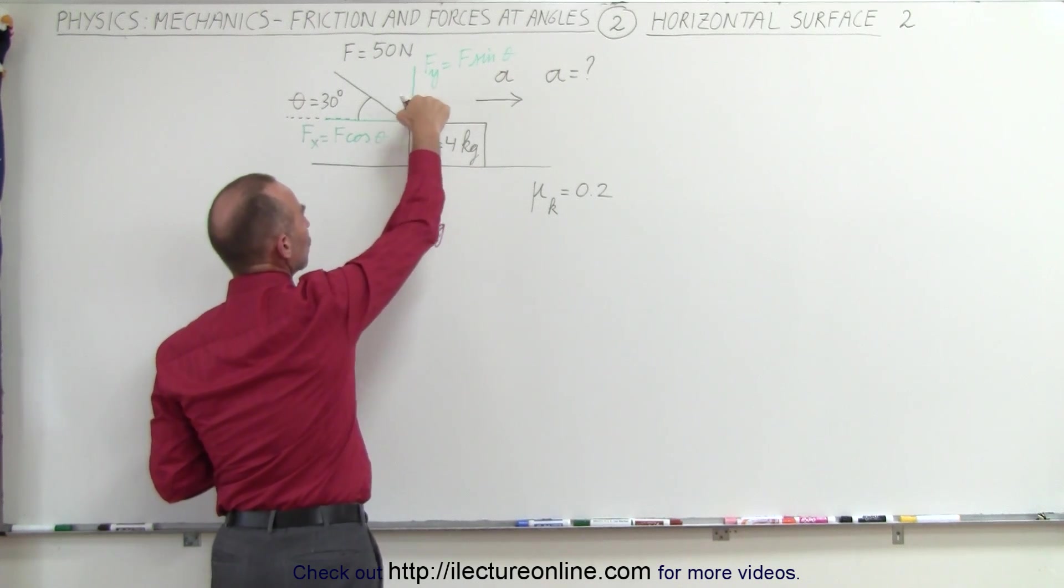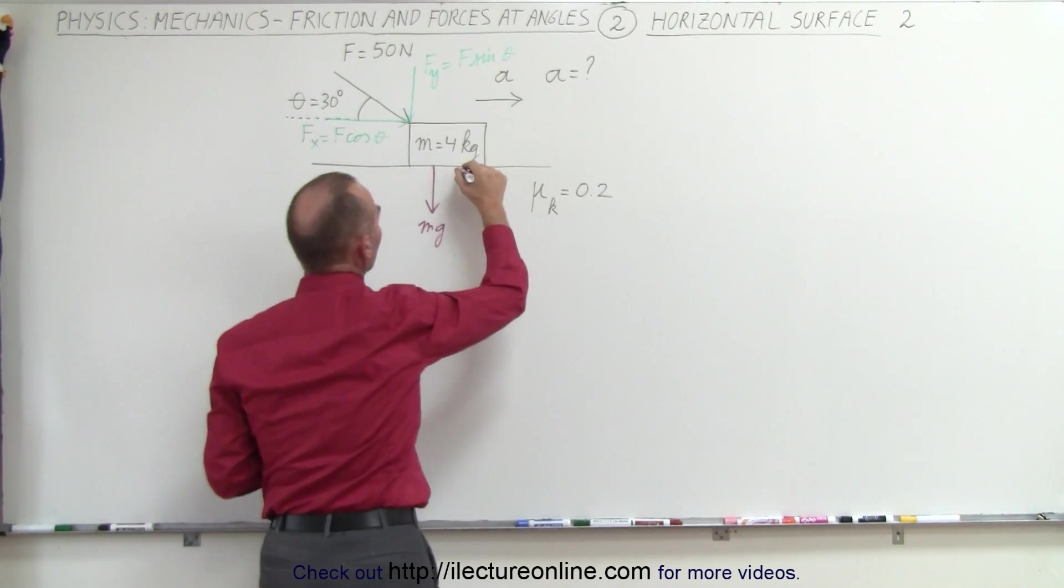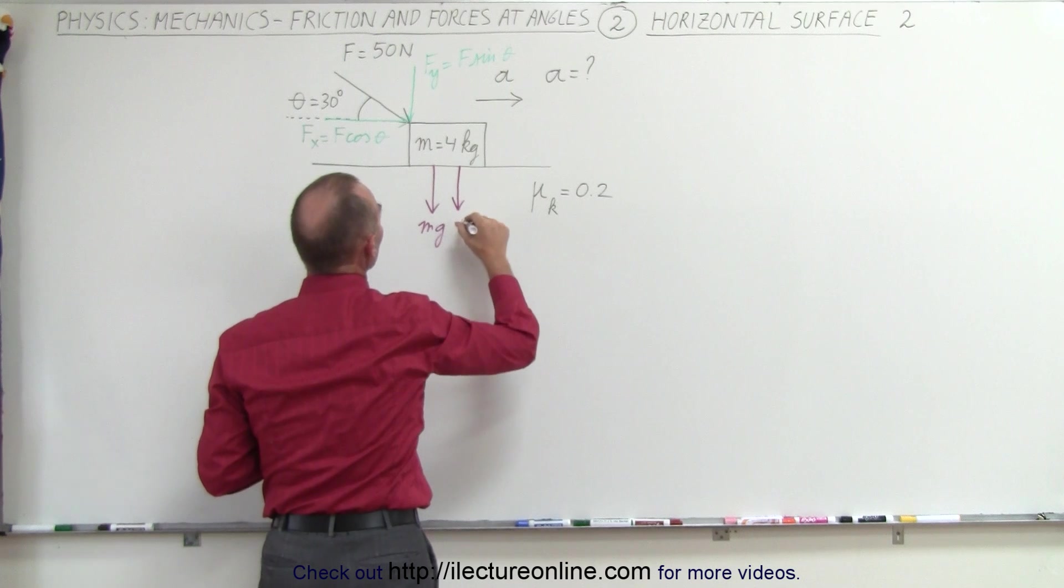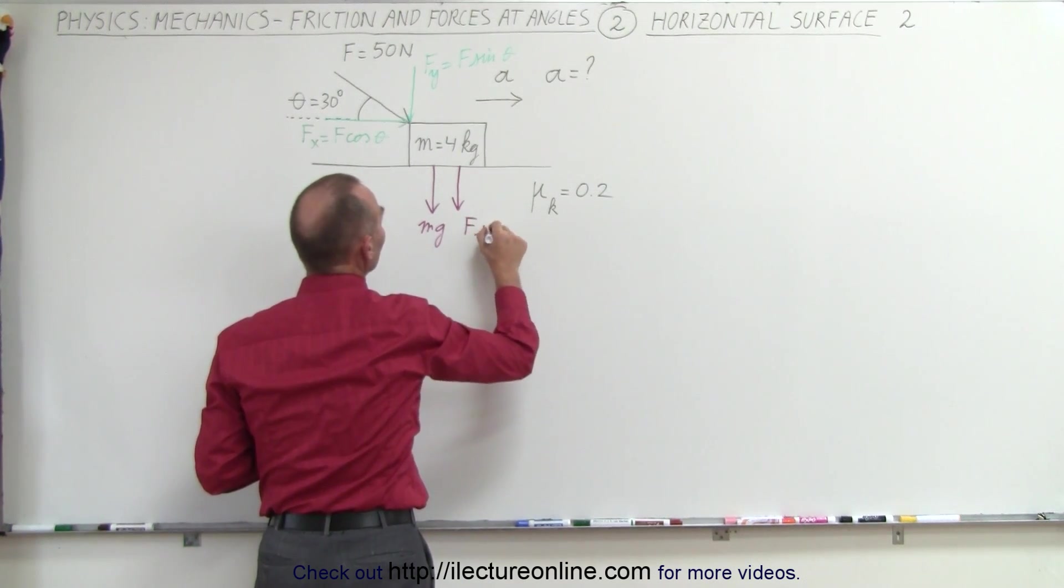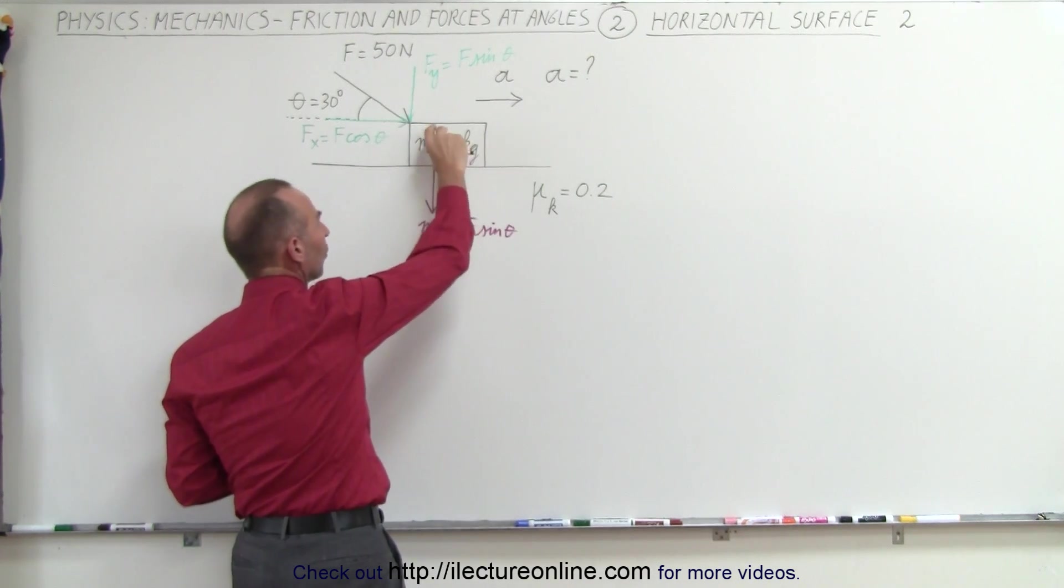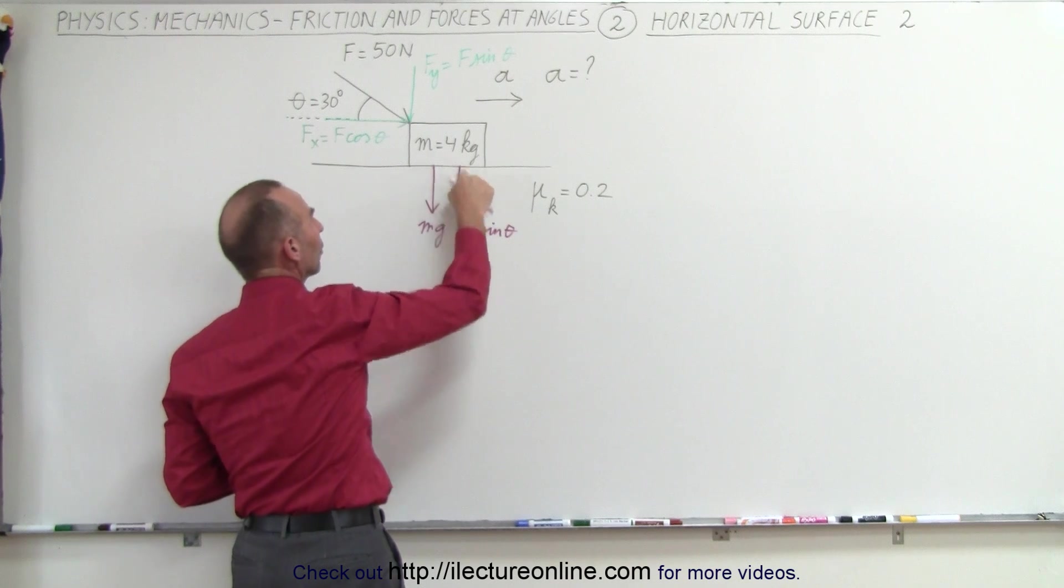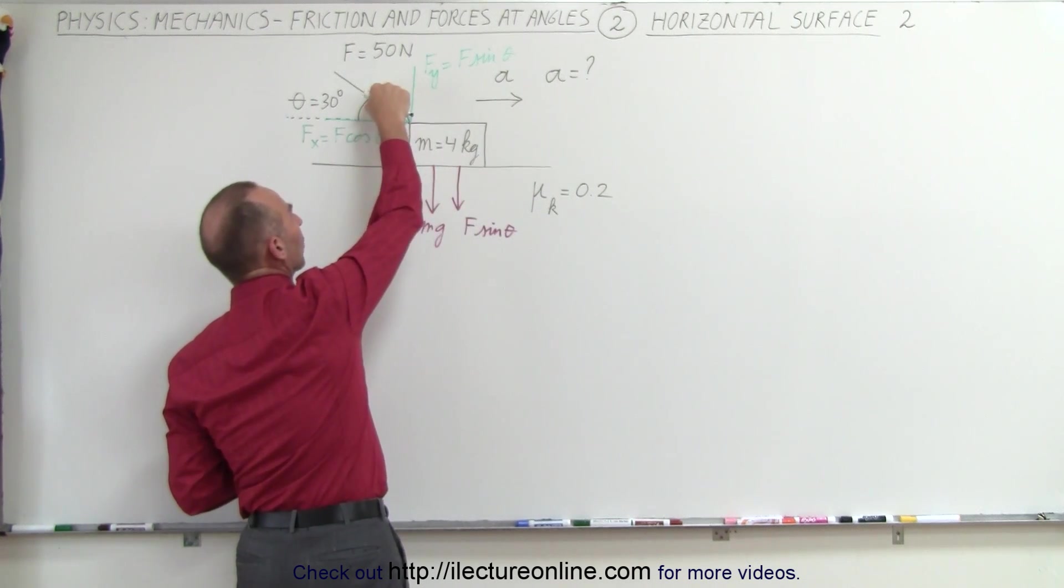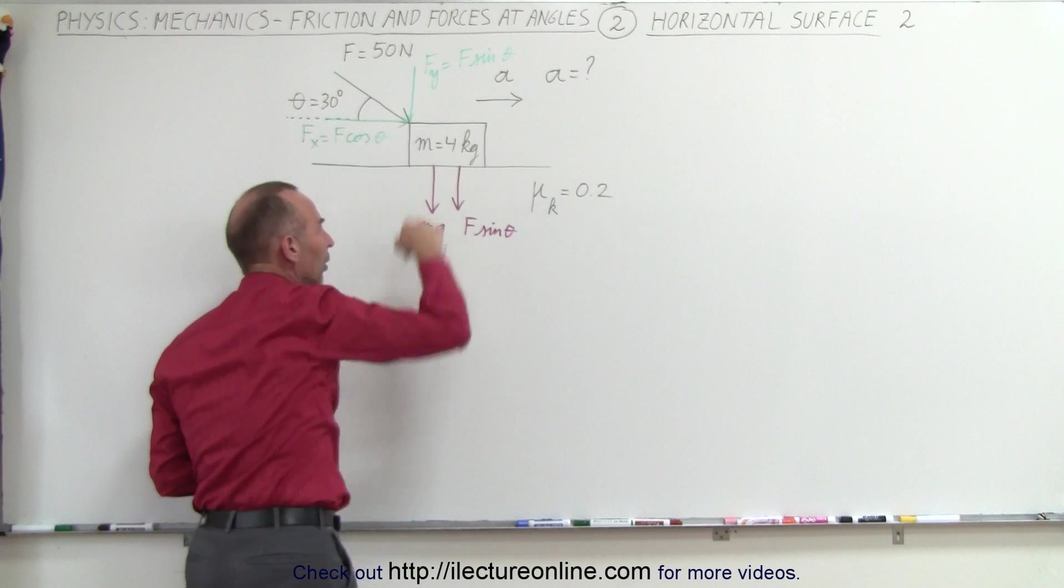This vertical component is transferred through the block to the floor, so we also have a force downward which is the force in the y direction, f times the sine of theta. So both of these forces are pushing down on the surface: one is the weight of the block, the other is the vertical component of this force pushing through the block to the floor.